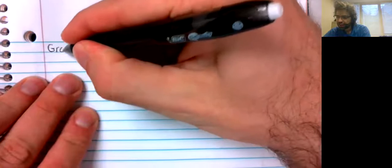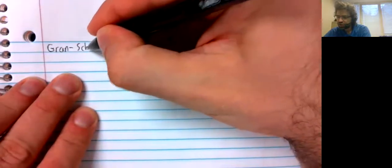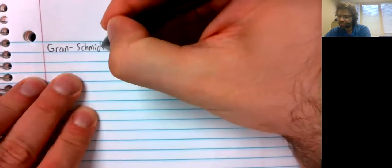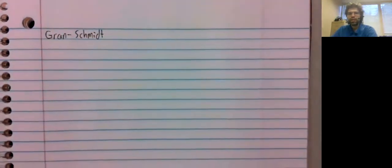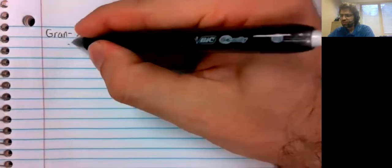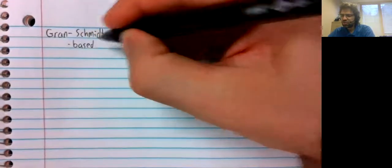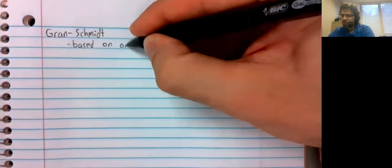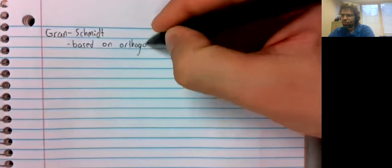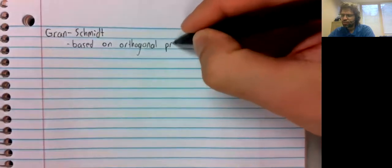The Gram-Schmidt process is a process for taking a basis and turning it into an orthogonal basis. Gram-Schmidt. The Gram-Schmidt process is based on orthogonal projections.